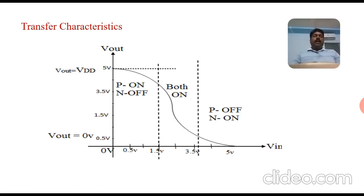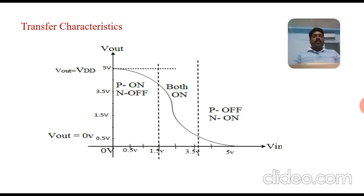Transfer characteristics: On the X-axis is V-input and on the Y-axis is V-out. Initially, V-input is zero, so V-out equals VDD. As input voltage increases toward 5 volts, the devices change their conducting properties. From 0 to 1.5 volts, P-channel is ON and N-channel is OFF, giving V-out equal to VDD minus VT (threshold voltage). When input exceeds 1.5 V, P-channel goes to partially ON and N-channel to partially OFF.